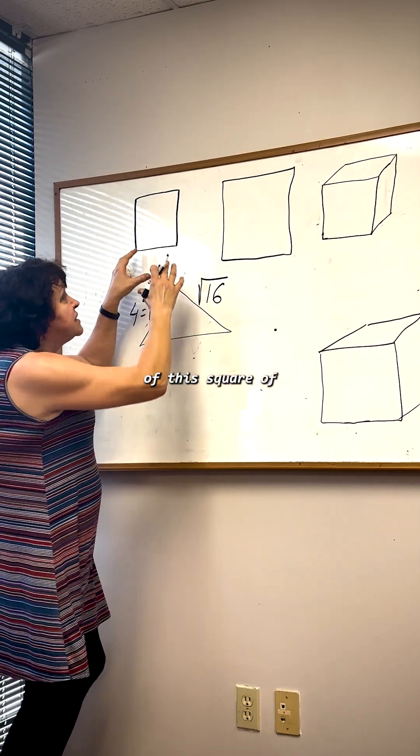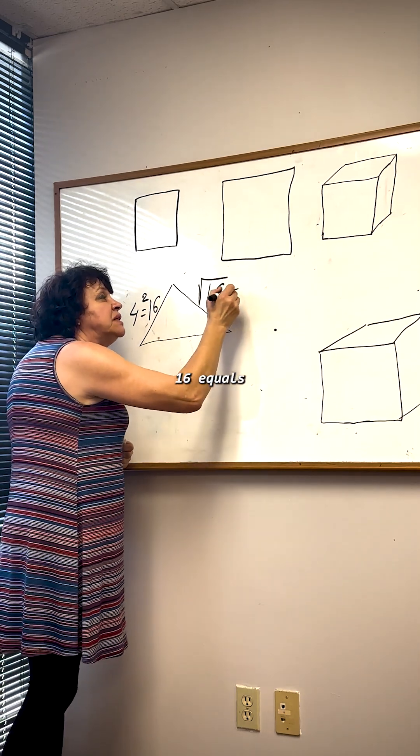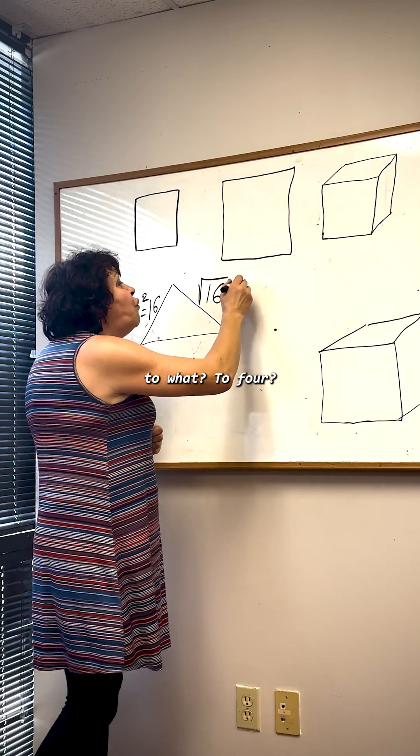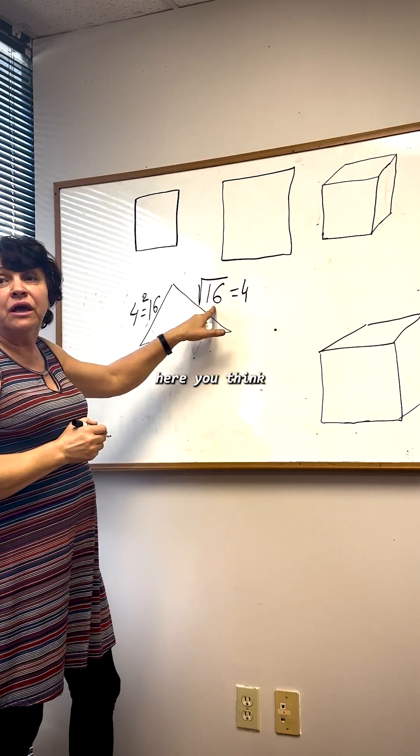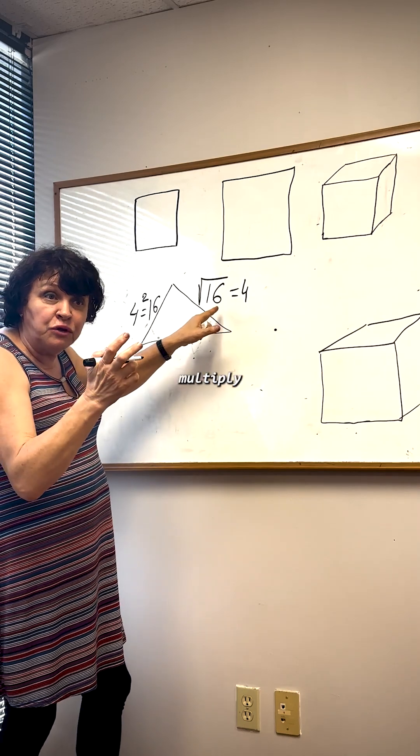What's going to be the side of the square? Which number by itself two times you have to multiply to get number 16?